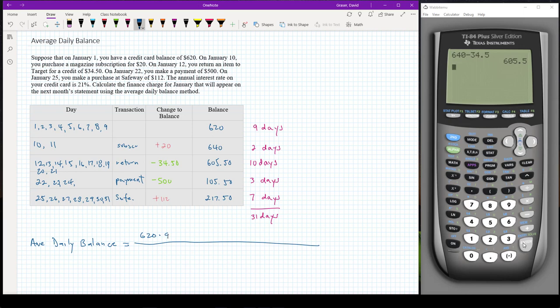I'm going to add that 640 times the two days, plus 605.50 times the 10 days, the 105.50 times the three days, and finally the 217.50 times the 10 days. That's going to count for all 31 days, so then I divide it by 31.